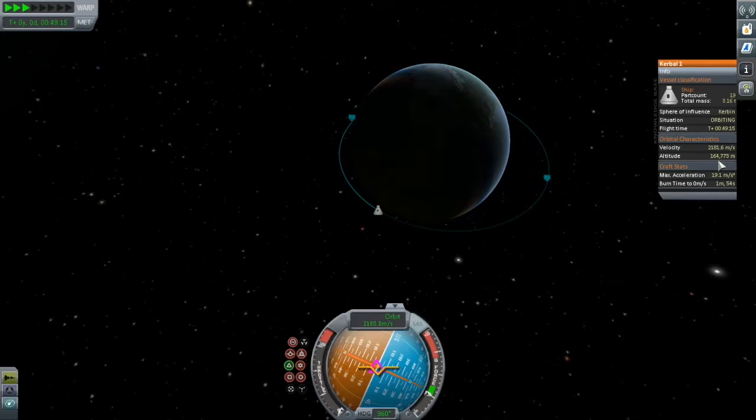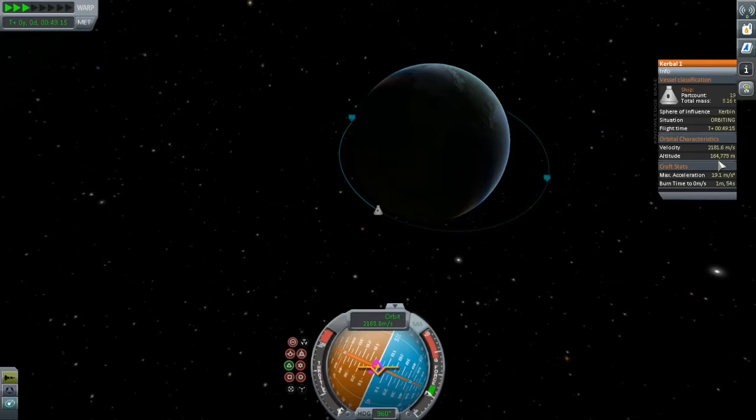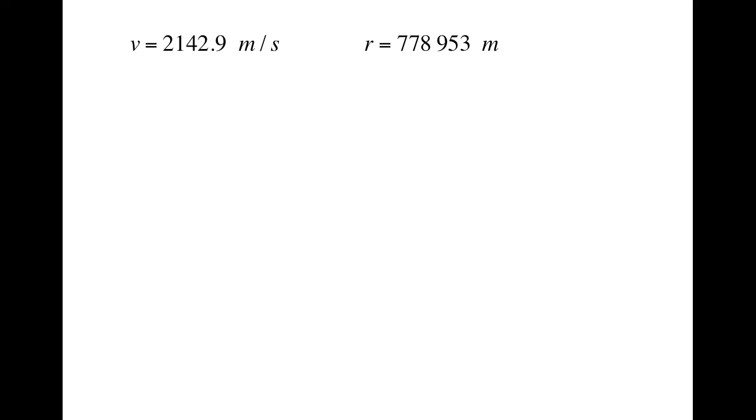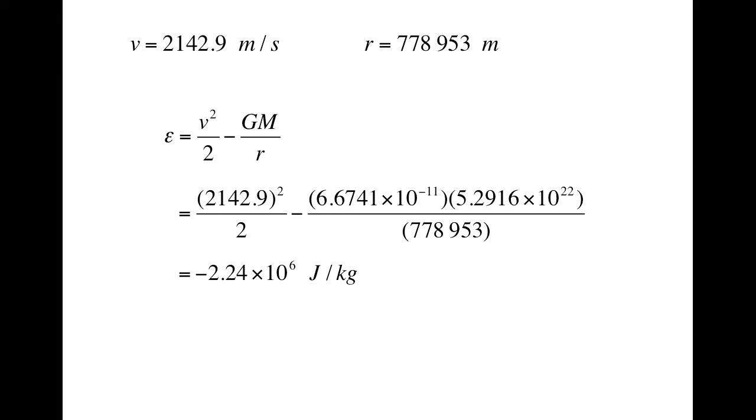Now by the law of conservation of energy, if we don't do any burns or dip into the atmosphere, this energy should be a constant no matter where we are in our orbit. For example, how about here? Our velocity is now 2,142.9 meters per second, and our altitude is 178,953 meters. I've modified the formula a bit by just taking out the little m's. Substituting gets us an epsilon of negative 2.24 times 10 to the 6 joules per kilogram once again. What do you know? KSP knows physics.